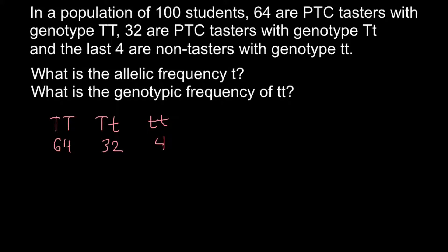As you can see, altogether we have 100 individuals. To find allelic frequency, if we have 64 individuals whose genotype is homozygous dominant, that means each individual has 2 dominant alleles — capital T and capital T. Because we are diploid, 64 individuals would have 128 alleles. In this example, for the homozygous dominant individuals, they would have 128 capital T alleles.